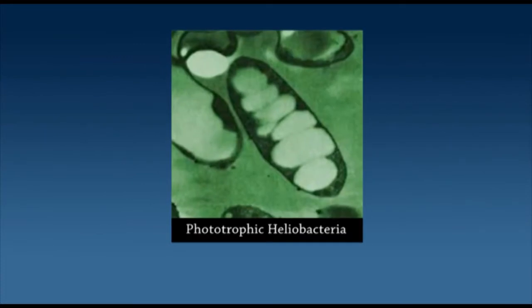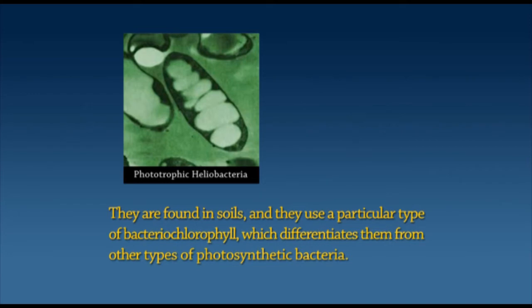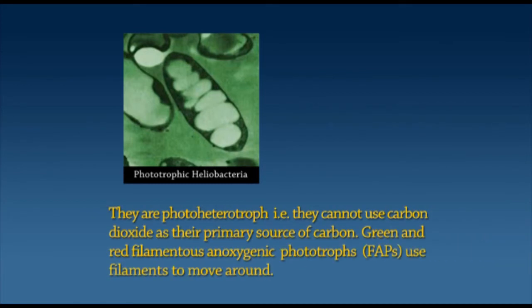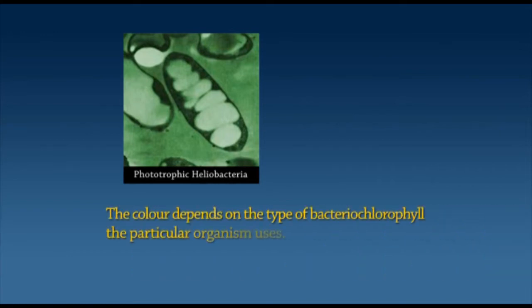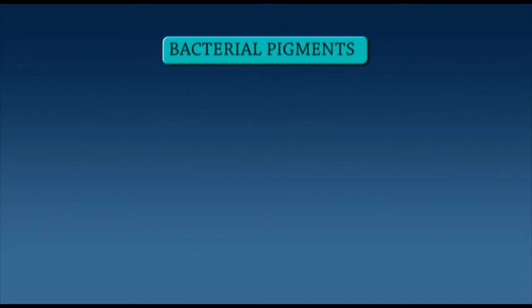Phototrophic heliobacteria are found in soils and use a particular type of bacteriochlorophyll which differentiates them from other photosynthetic bacteria. They are photoheterotropes — that is, they cannot use carbon dioxide as their primary source of carbon. Green and red filamentous anoxygenic phototropes or FAPs use filaments to move around; the colour depends on the type of bacteriochlorophyll the organism uses. This form of bacteria can either be photo-autotrophic, making their own energy through the sun's energy, or chemo-organotrophic, requiring a source of carbon, or photo-heterotrophic, meaning they don't use carbon dioxide as their carbon source.